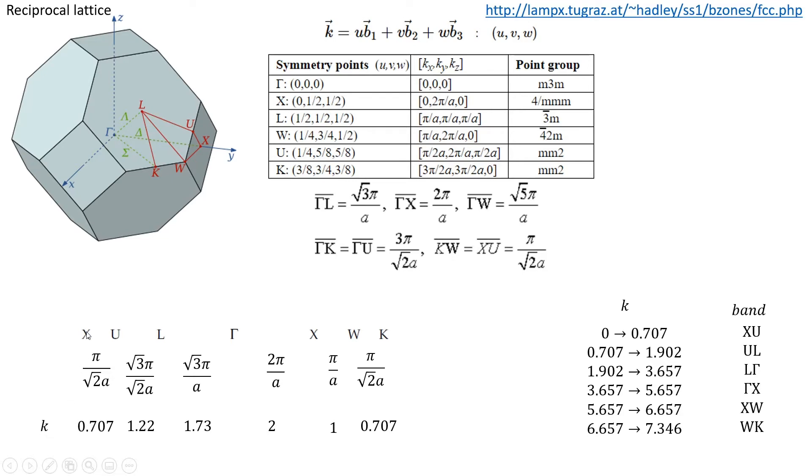I know already the length of each band on the edge on the Brillouin zone, so I know that the length of k to span all the vectors from the XU edge of the Brillouin zone should have this length 0.707. Here I changed k from 0 to 0.707 to get this XU band.